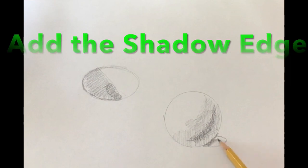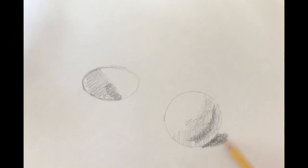The shadow edge is going to help it pop. It's like a little U. So I put that there and spread it out a tiny bit.